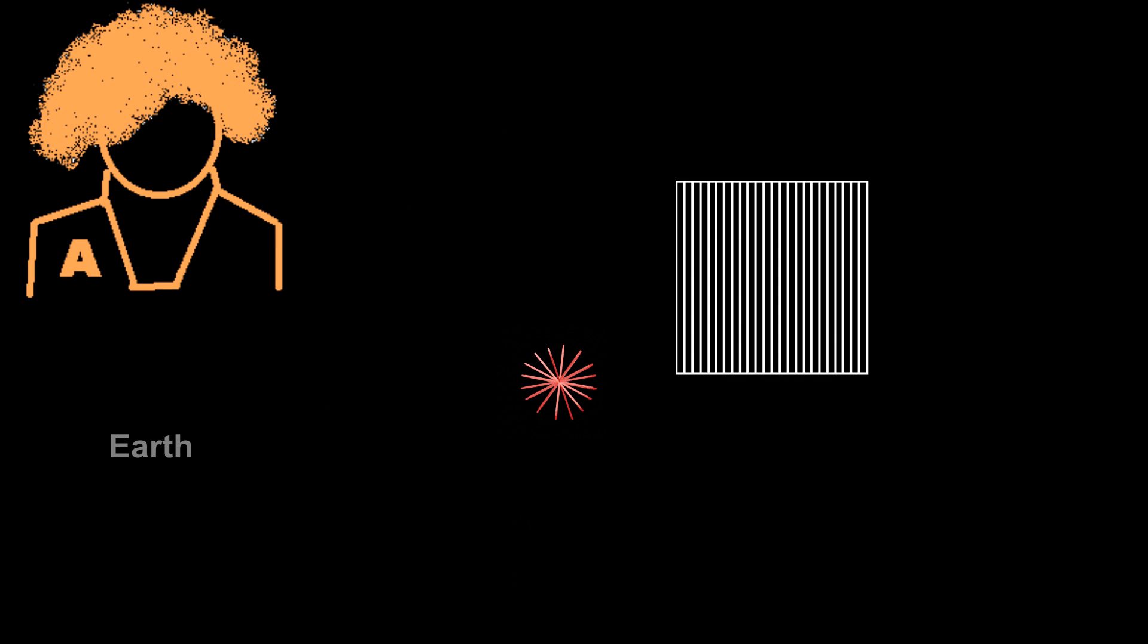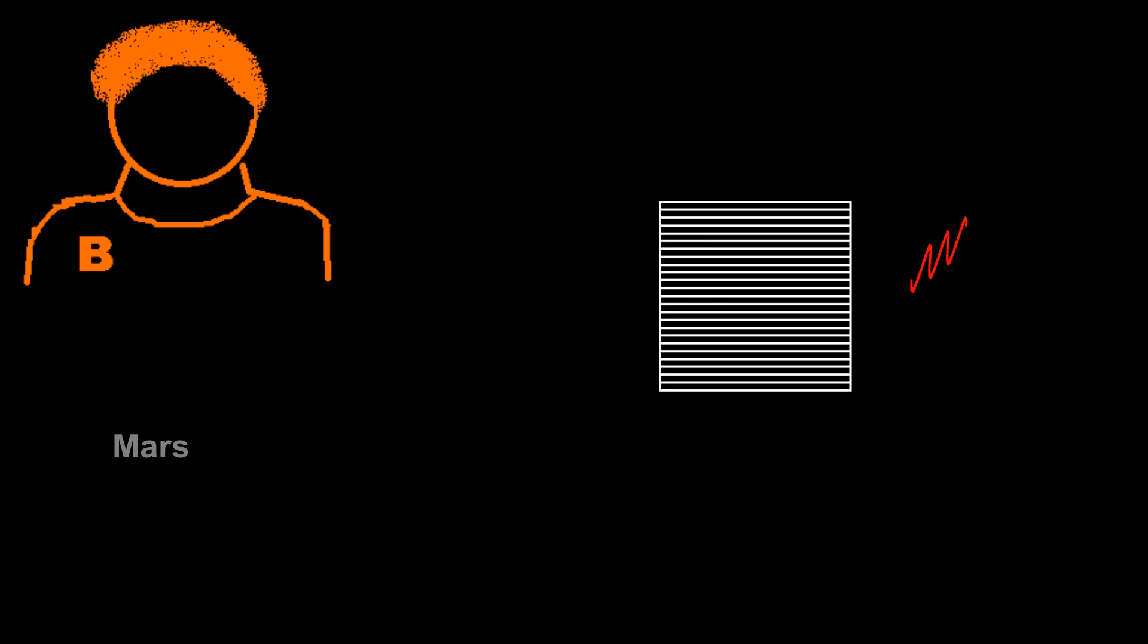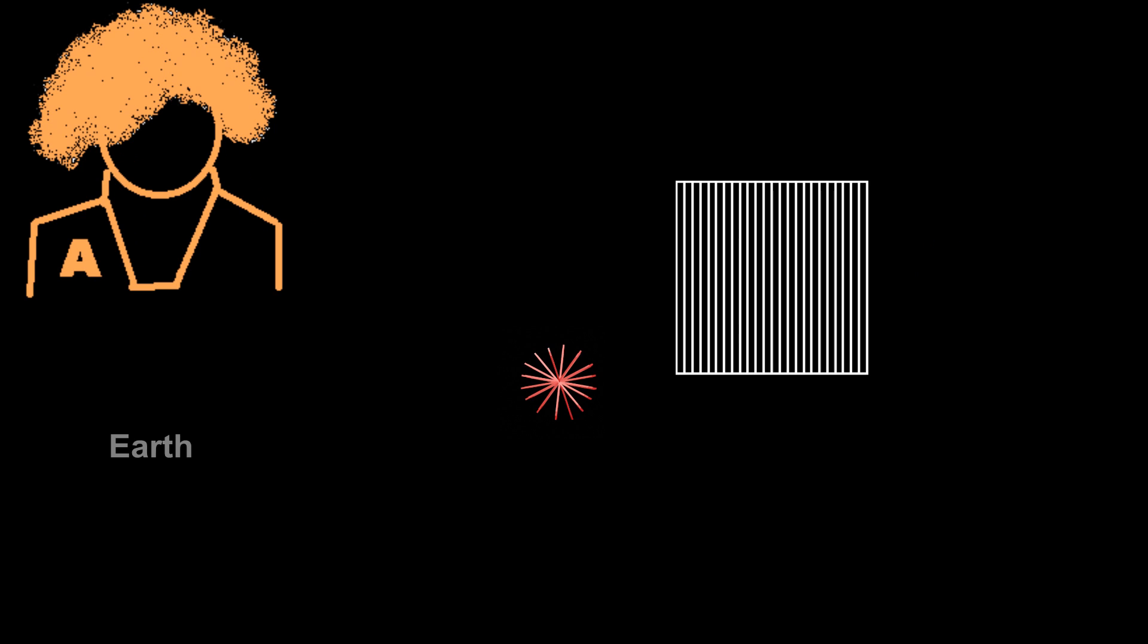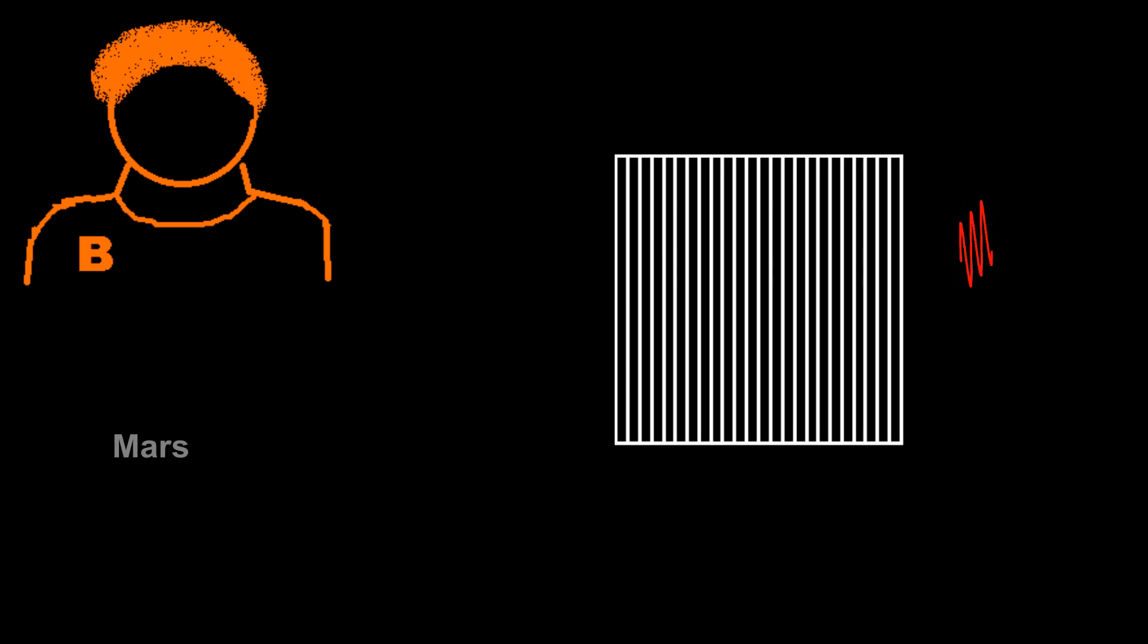First time, she tries with vertical filter and found passed. So she sent message to Bob to use horizontal filter. Bob then uses horizontal filter and found passed. Second time, Alice uses the same vertical filter and found blocked. So she sent message to Bob to use vertical filter. Bob then uses vertical filter and found passed. So the result is success.